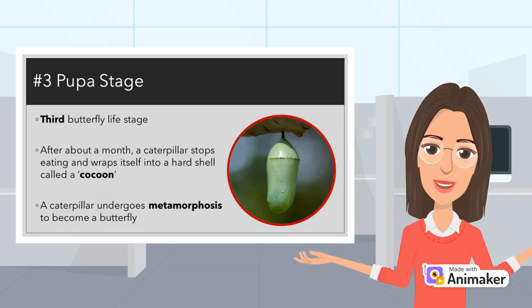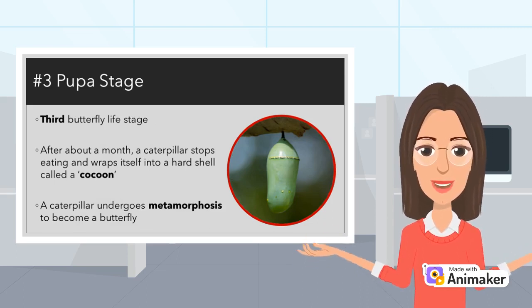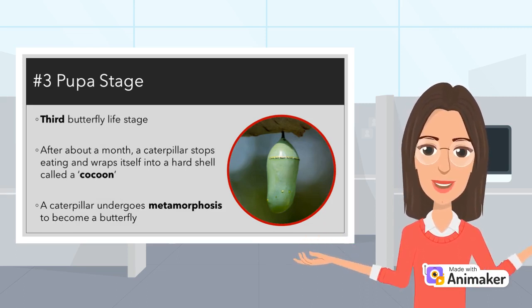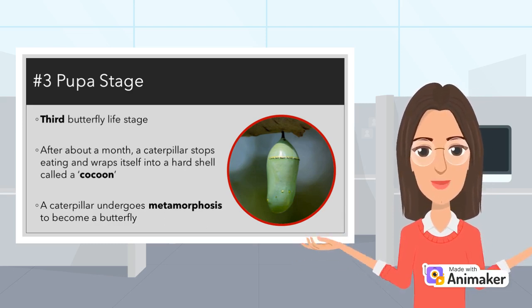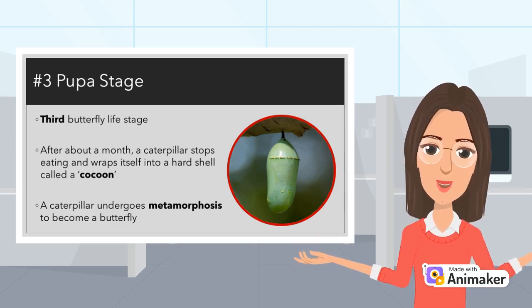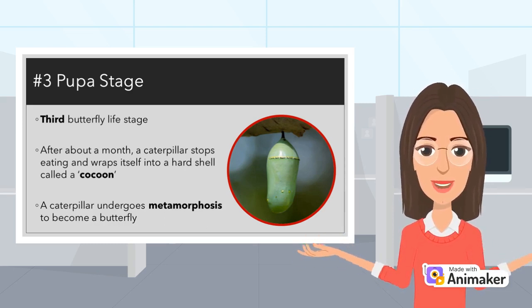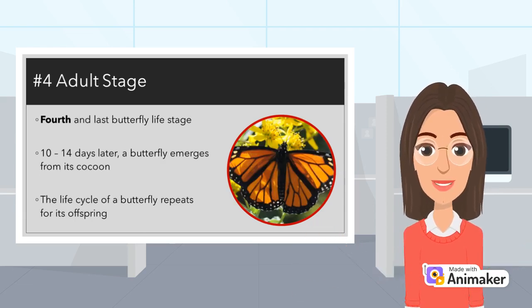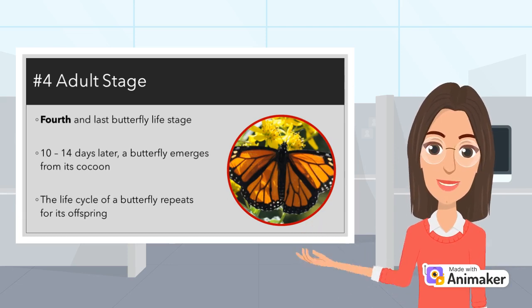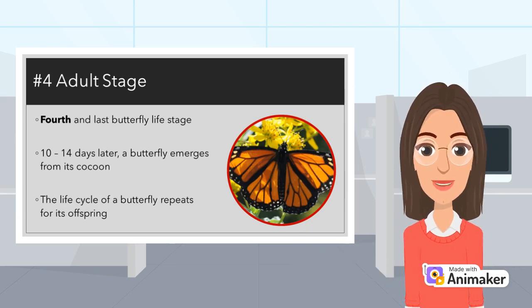This is the third stage of the butterfly, the pupa stage. During this stage, the caterpillar will undergo a process called metamorphosis to change into a butterfly. Ten to fourteen days later, a butterfly will emerge from its cocoon, entering the fourth and final stage of its life cycle, the adult stage.